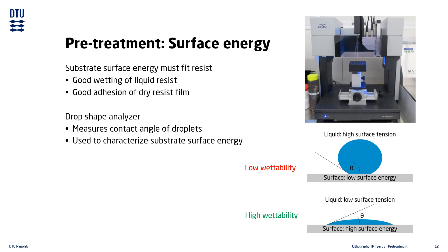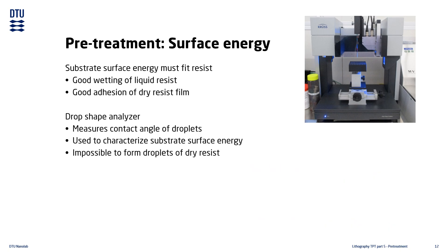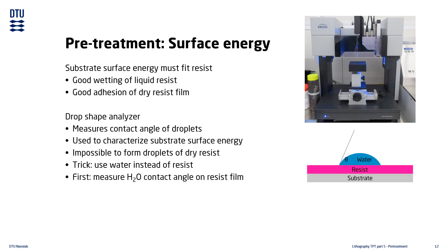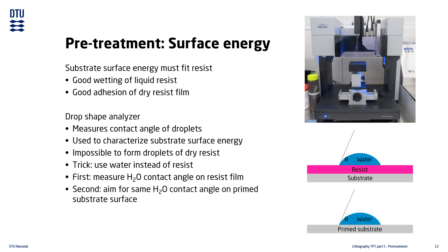Unfortunately we encounter a problem when using this method with resists. The liquid resist could potentially be measured using this method, giving an indication of the wetting properties in its liquid form, but it tells us nothing about how the dry resist film interacts with the surface. Furthermore, trying to form droplets with a solid material is nonsensical. Instead we use a clever trick: we first assume that the surface energy of the resist film must match the surface energy of the substrate to get good adhesion. We then place a droplet of water on top of a resist film and measure the contact angle. This contact angle is used as a target angle for measurements on primed substrates — again just using water. Empirical data shows that when these two contact angles are the same, at approximately 70 degrees, the surface energy of the substrate has a good fit with the resist.